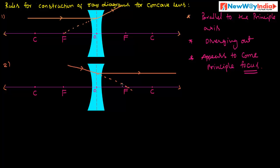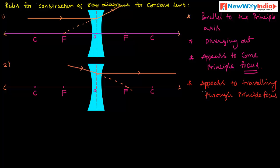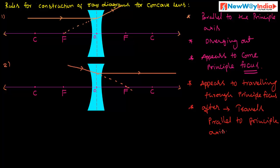This is the second rule. Here, the incident ray appears to be traveling through the principal focus. After passing through the concave lens, it will travel parallel to the principal axis. This is the second rule.